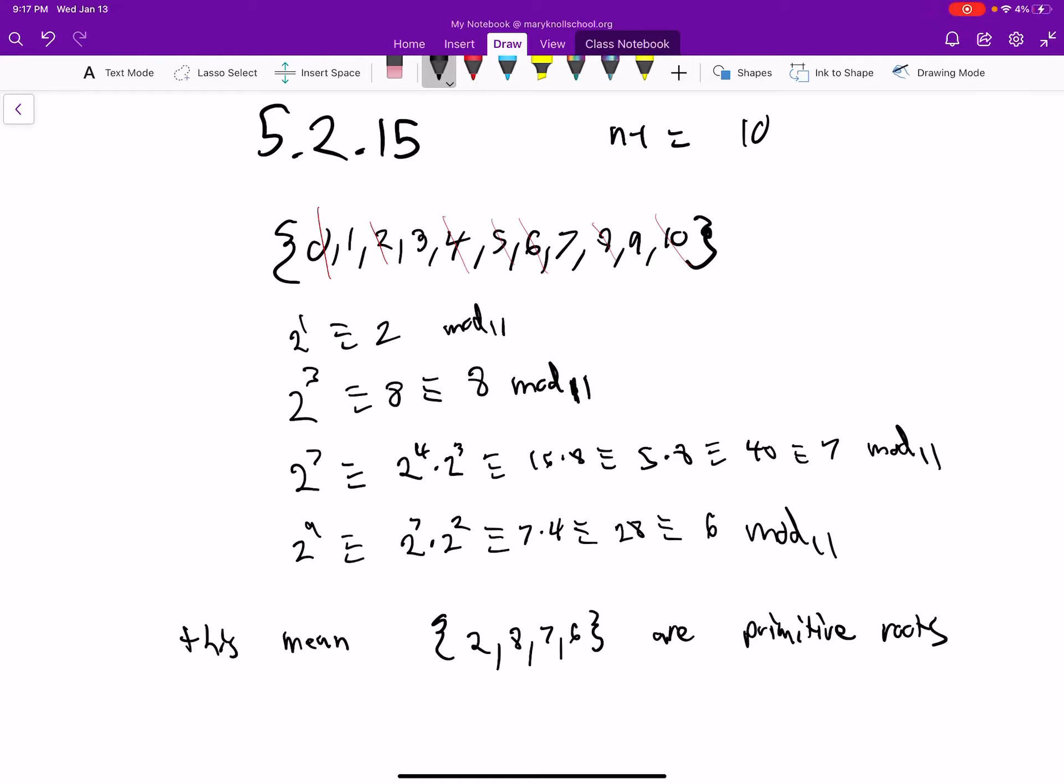Okay, 5.2.15, we're looking for all the primitive roots. First thing you do is you list out all the elements.